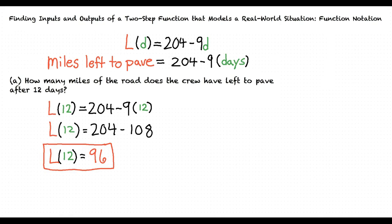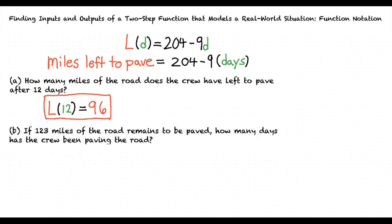Let's try out the next question. If 123 miles of the road remains to be paved, how many days has the crew been paving the road? Okay. So for this problem, we are given an output and asked to find an input, right? Exactly. This question is giving us the amount of miles left to be paved, which is the output of the function we were given, and asking us to find the amount of days the crew has been paving, which is the input of the function.